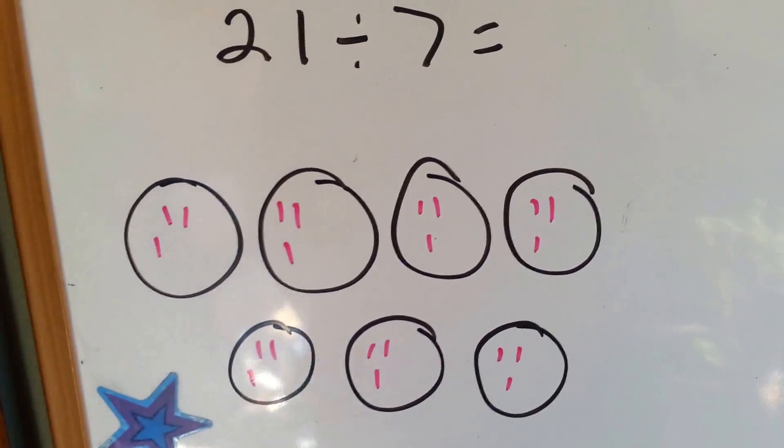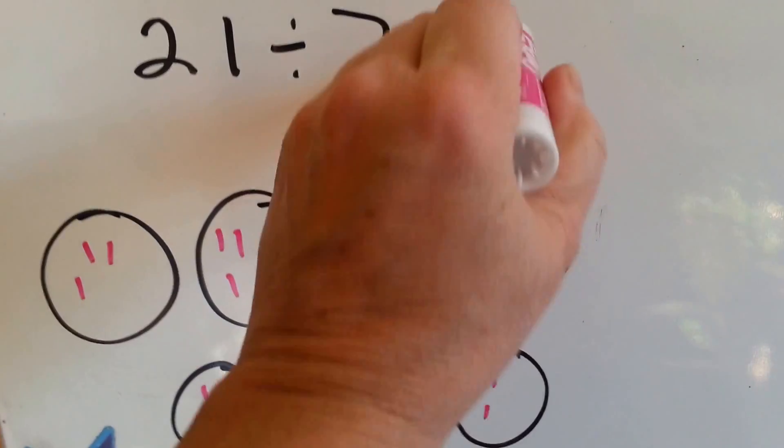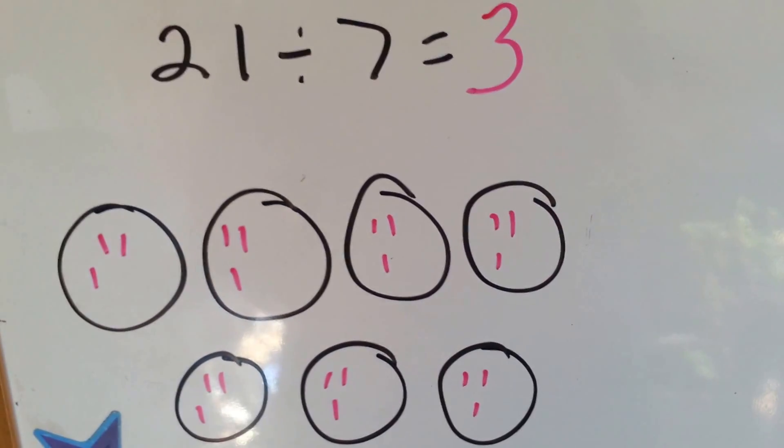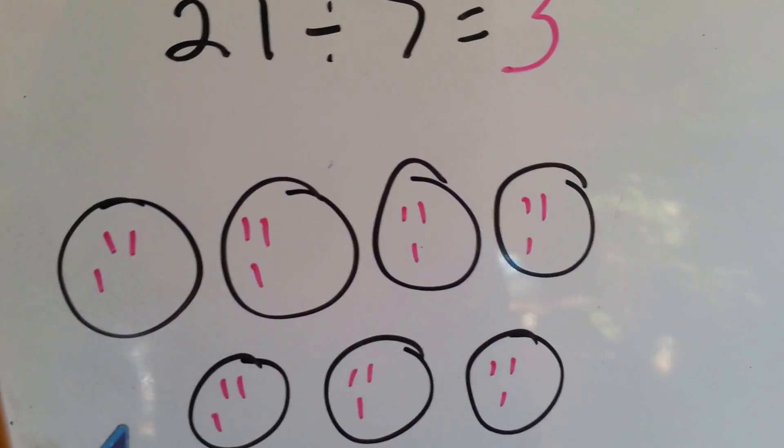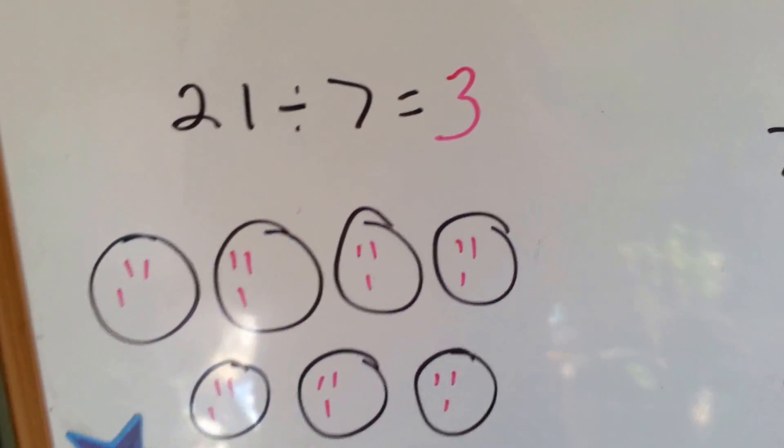See how I did that? So now, how many do we have in each group? We have 3. So, 21 divided by 7 is 3. See how easy that was to do? This is my favorite method...